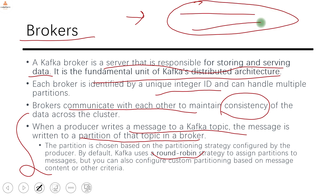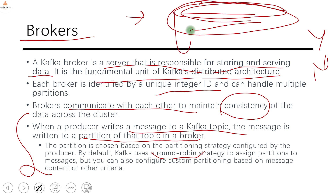An important question is whether messages are ordered. The answer is yes and no. When you send a message, a topic is decided and then a partition is decided — so messages are ordered within a partition, but they are not ordered across the topic. If you send 10 messages, there is no guarantee they all go to the same partition. So if a producer needs ordering, they need to ensure messages go to the same partition using a custom partitioning strategy.